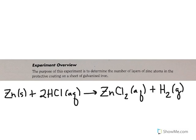The reaction that you're going to do is shown below. The amount of zinc deposited on the surface of galvanized iron can be determined by reacting the zinc with hydrochloric acid. The products of the reaction are zinc chloride, which dissolves in the hydrochloric acid solution, and hydrogen gas, which bubbles out of the solution.